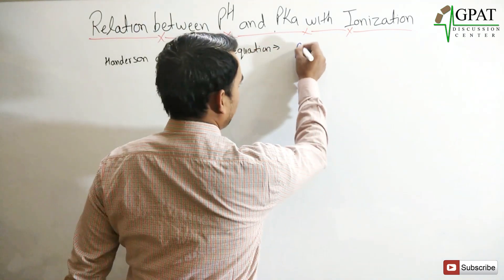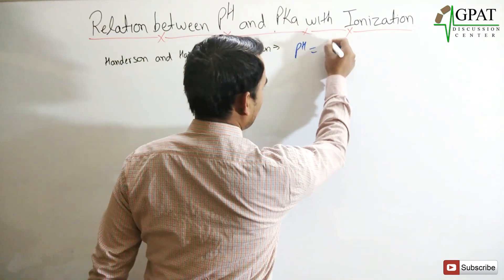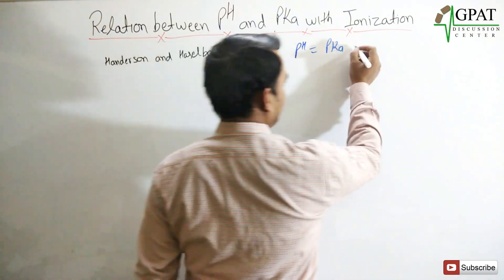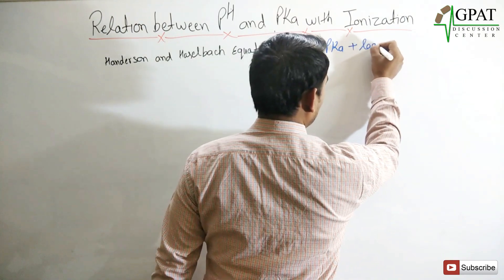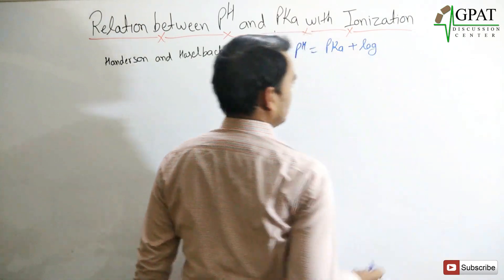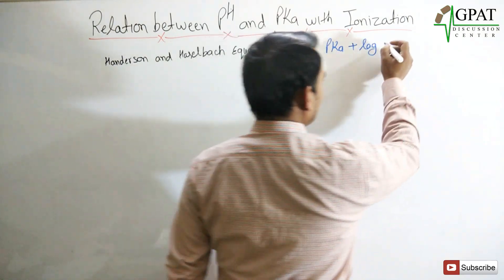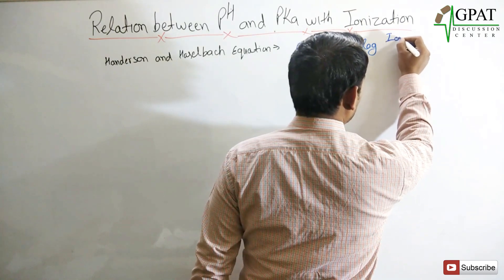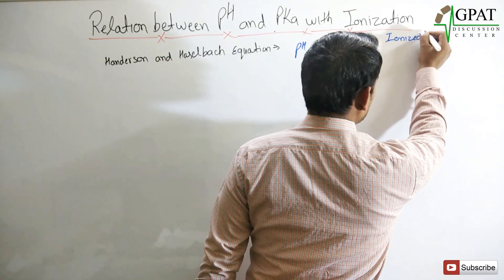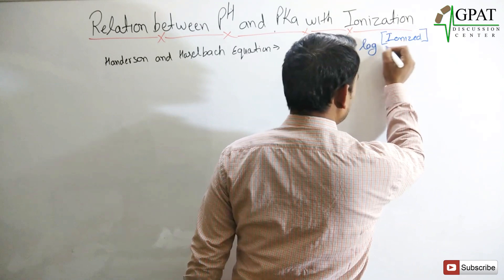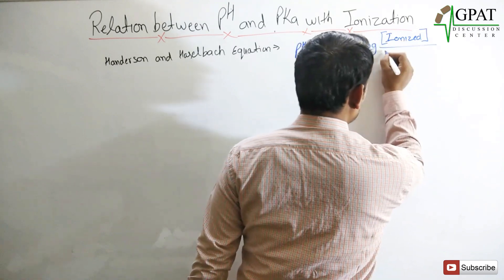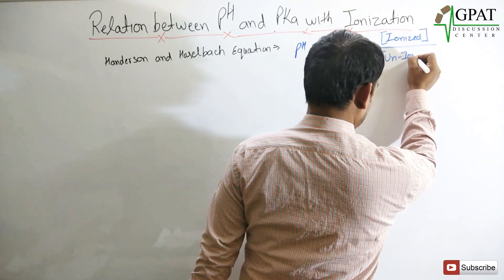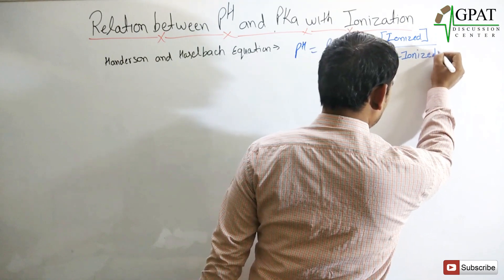The Henderson-Hasselbalch equation states: pH = pKa + log(ionized / unionized).